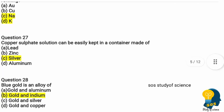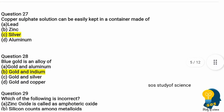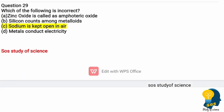Question twenty-seven: copper sulfate solution can be easily kept in a container made of — option A lead, option B zinc, option C silver, option D aluminium. The correct answer is silver, because silver is less reactive than copper.